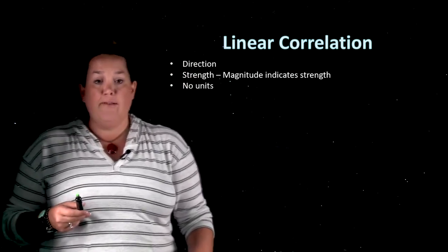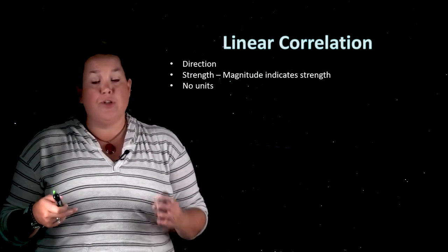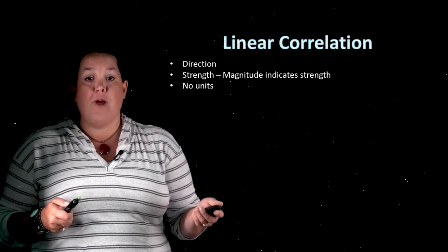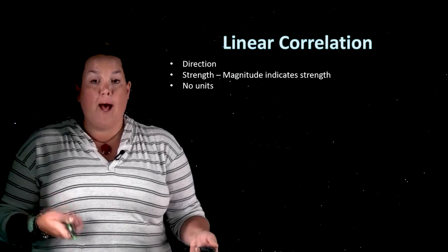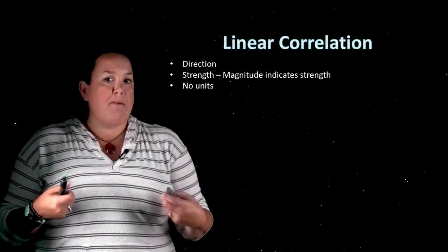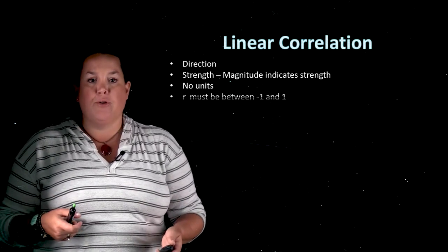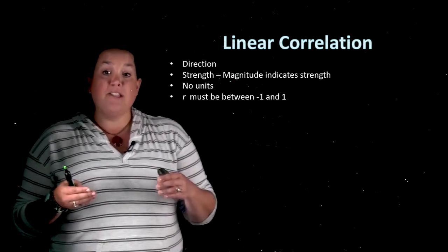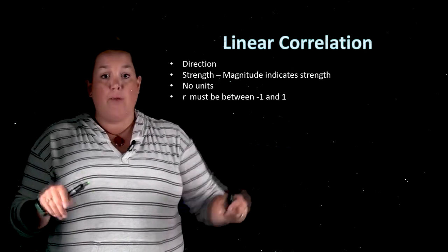The correlation coefficient does not have units. So it's just looking at the strength of the relationship and the direction. It will not have the units that are represented on the scatter plot like age and maybe distance to read a highway sign. That doesn't exist for these correlation coefficients. Another rule is that it has to be between negative 1 and positive 1. It will not go outside of that range.